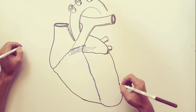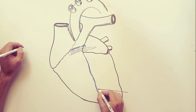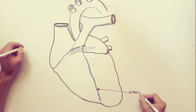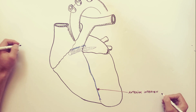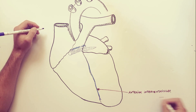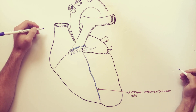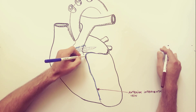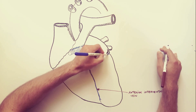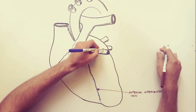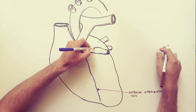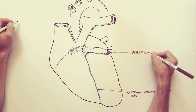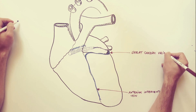The first vein to be indicated that drains into the coronary sinus is the great cardiac vein. The great cardiac vein begins with the anterior interventricular vein, which is located in the anterior interventricular sulcus. Near the beginning of the left coronary sulcus, it becomes continuous with the actual great cardiac vein. The great cardiac vein follows the left coronary sulcus, also on its posterior side, and drains into the left part of the coronary sinus, becoming continuous with it.